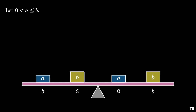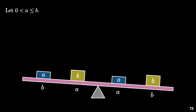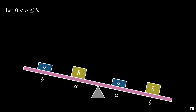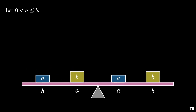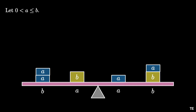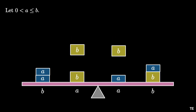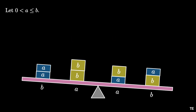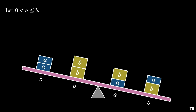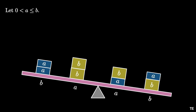Since the heavier weight is farther on the right side, the system will rotate clockwise if left to move. Now place two weights of mass a at opposite b distances and two weights of mass b at opposite a distances. Because these weights counteract one another, the net moment of the system is the same and it will rotate clockwise.